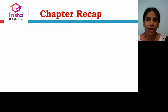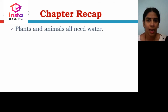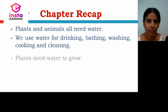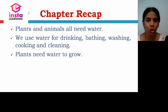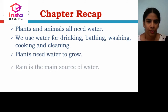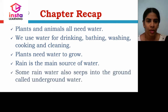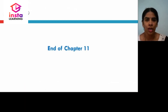Let us have a chapter recap. Plants and animals all need water. We use water for drinking, bathing, washing, cooking and cleaning. Plants also need water to grow. Rain water is the main source of water. Some rain water seeps into the ground and is called underground water. This ends Chapter 11.